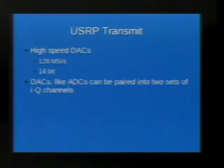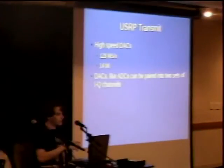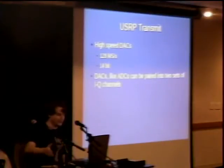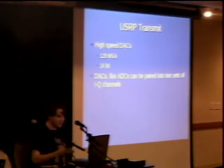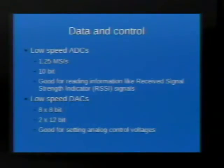On the transmit side, it's the mirror image of the ADCs. The digital-to-analog converters are a little bit faster at 128 million points per second, and a little more accurate at 14 bits per sample. Just like the ADCs, you can split them into four separate sets or pair them together in IQ channels. For data and control, there are some low-speed ADCs and DACs used for reading attributes and configuring hardware features.